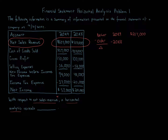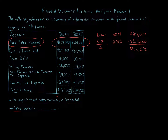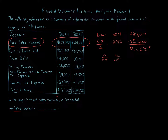$607,000 minus the 20x8 number of $503,000 gives us a difference of $104,000. That is the change in dollar amount. To determine the percentage, we take the change over the older year amount — so $104,000 divided by $503,000 — and that gives us our percentage.